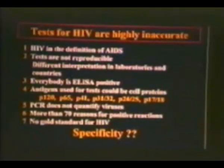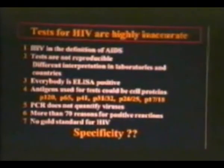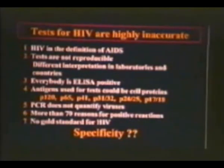Regarding the Western blot test, they say the ELISA test is not very specific because you are looking for a bunch of proteins and antigens from the virus, but that the Western blot is better because you look for different bands — different proteins of the virus. These proteins are called P120, P65, P41, P31 or P32, P24, and P17. Those numbers represent the weight of the protein in the laboratory, based on the number of amino acids and the size of the protein.